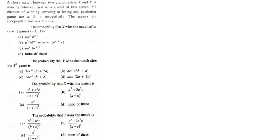A chess match between two grandmasters X and Y is won by whoever wins first a total of two games. X's chances of winning, drawing, and losing are a, b, and c respectively, with a + b + c = 1 and games are independent. So winning, drawing, and losing are mutually exclusive and exhaustive.